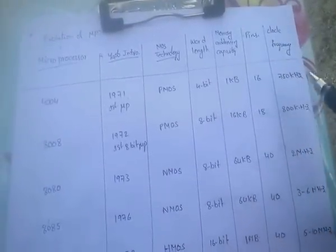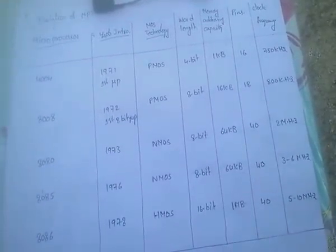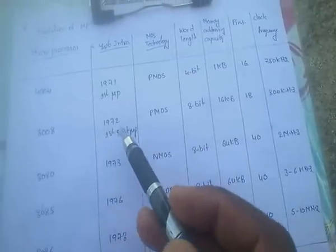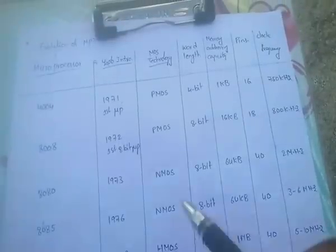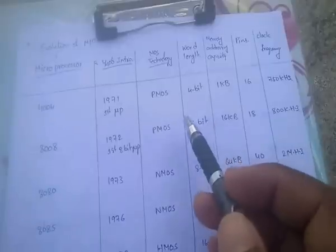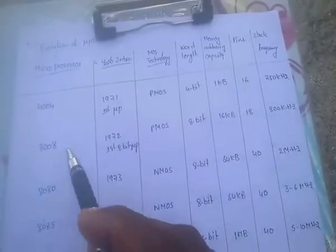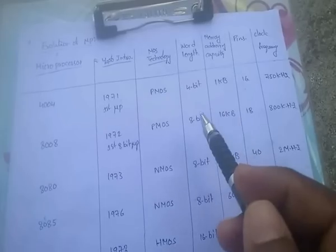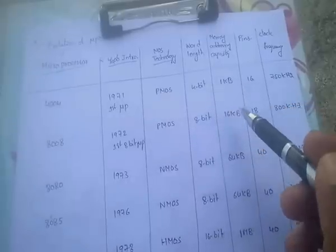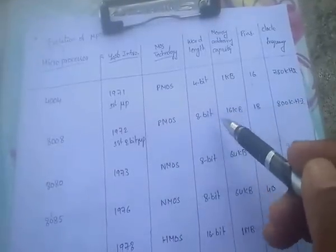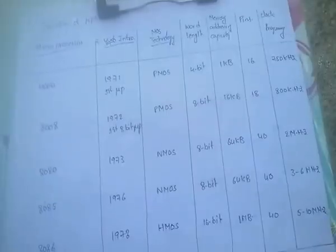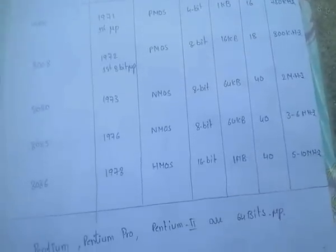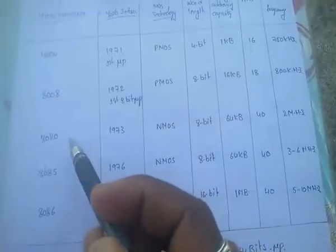The second microprocessor is the 8008, developed in 1972 with PMOS technology. Its word length is 8 bits, memory addressing capacity is 16 kilobytes, number of pins is 18, and the clock frequency is 800 KHz.